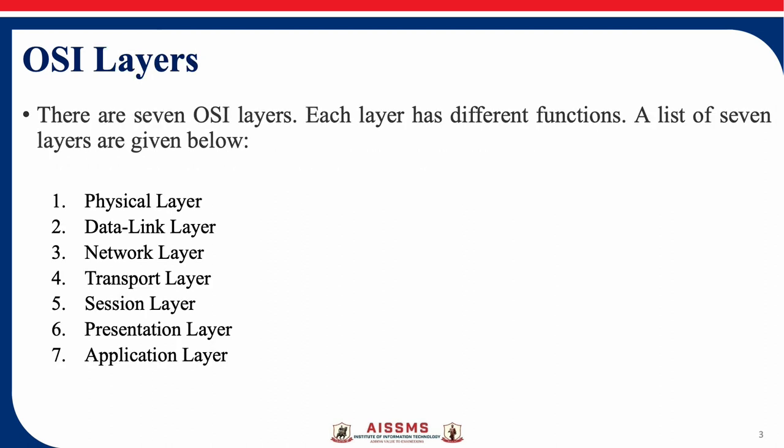There are 7 OSI layers, and each layer has different functions. The first is the physical layer, then the data link layer, network layer, transport layer, session layer, presentation layer, and application layer.